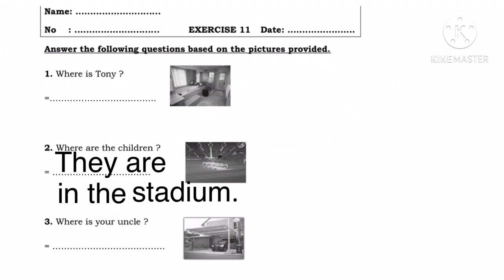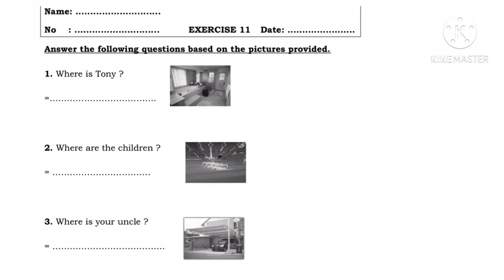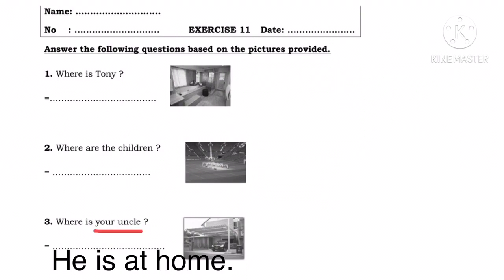Number three. Where is your uncle? Di mana paman kamu? He is at home — dia ada di rumah. Your uncle itu sama dengan laki-laki, jadi bisa kita ganti dengan subjek he. Setelah subjek he, letakkan to be is. So, he is at home.